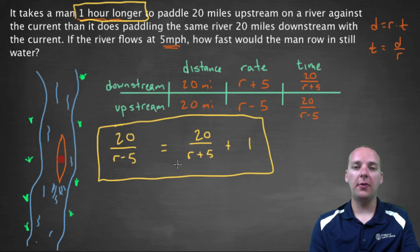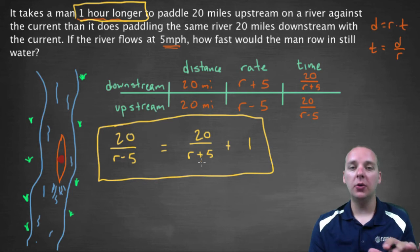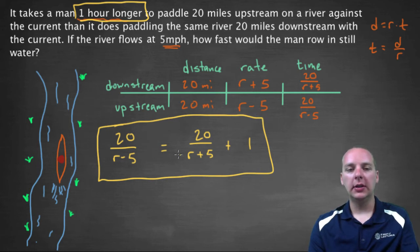If we can solve that for r, then what we'll have is our r value, that'll be our answer, that indicates how fast this guy would row in still water. Here, not with the current helping, but also not with it hurting, either. So let's remember this, and then we'll jot it down on the next sheet here. So just so we have some space to work. So 20 over r minus 5, equals 20 over r plus 5, plus 1.